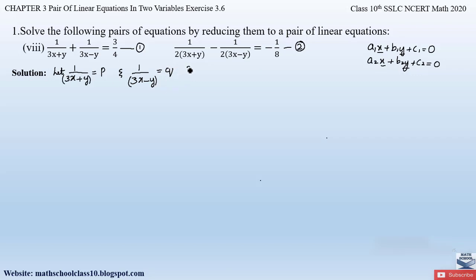Substituting in equation 1: we have 1/(3x+y) = p and 1/(3x−y) = q, so equation 1 becomes p + q = 3/4. Let us call this equation number 3.